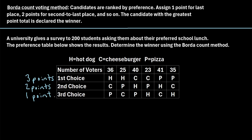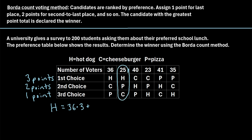Now we're going to calculate the total number of points for hot dog, cheeseburger, and pizza. Starting with hot dog: in the first column, hot dog was the first place choice and 36 students chose it, so hot dog gets 36 × 3 points. In the next column, 25 students also chose hot dog first, so that adds 25 × 3 points.